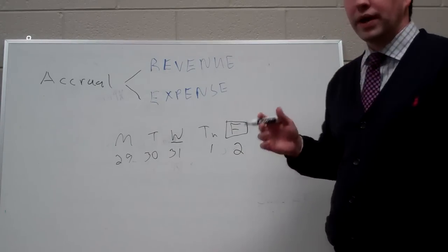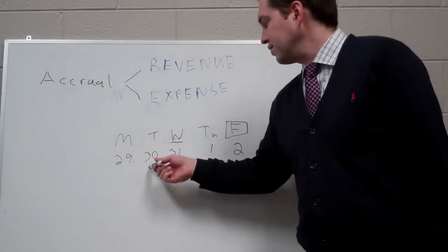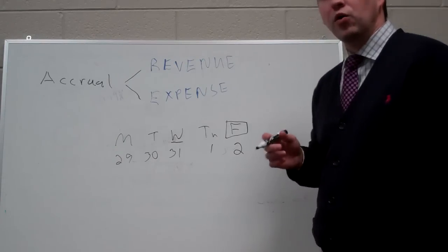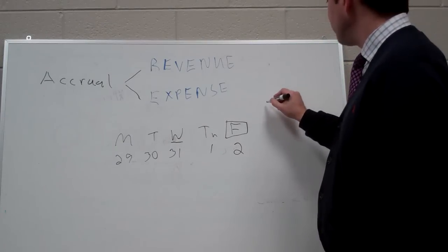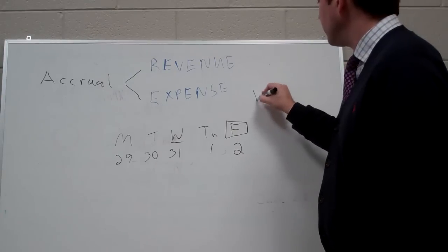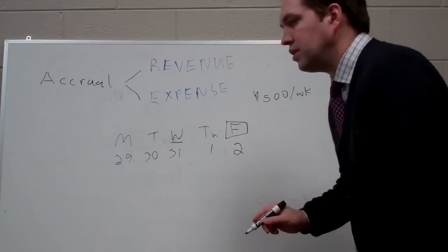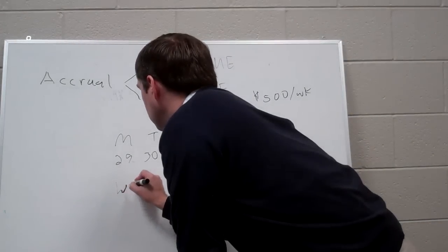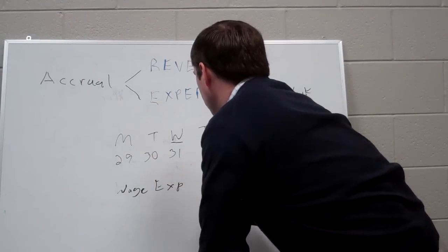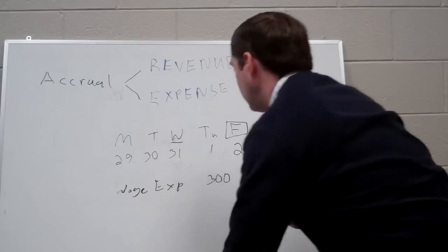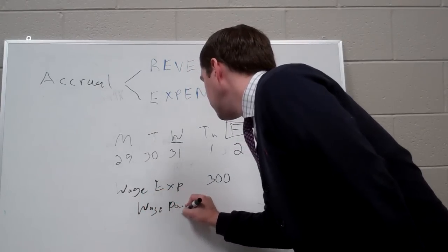Well, GAAP says we have to recognize expenses in the period we incur them. So we have to put the expenses related to paying employees for these three days on the books. We have to accrue those expenses. Let's say our employees get paid $500 per week. We have to accrue these three days expenses, which we do by debiting an expense. We're going to debit the wage expense account for $300.